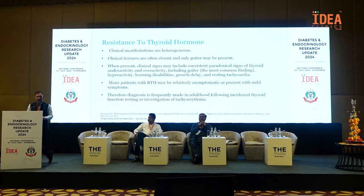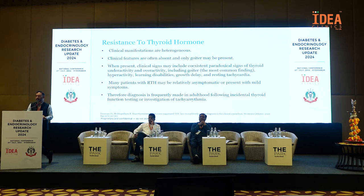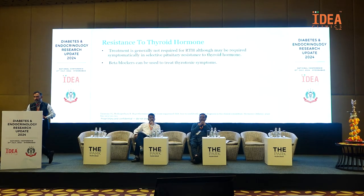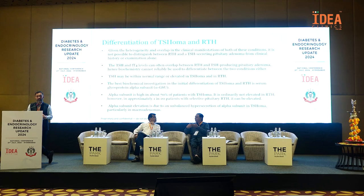Many patients with thyroid hormone resistance may be relatively asymptomatic, with only mild symptoms — similar to familial hypocalciuric hypercalcemia with calcium-sensing receptor mutations, or monogenic diabetes with glucokinase mutations. These are mild mutations that may go undetected. Generally, treatment is not required unless the patient is significantly symptomatic. For mild thyrotoxicosis, you can put them on a beta blocker. Beyond that, little can be done because it is a receptor-level mutation.